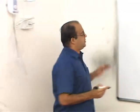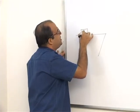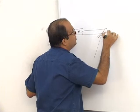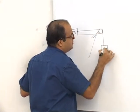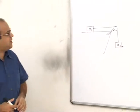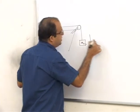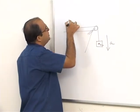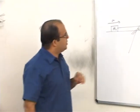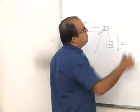Now let's look at the general case. We have mass M1 on a frictionless surface and mass M2 hanging. The pulleys and strings are massless. M2 will accelerate downward and M1 will accelerate to the right. We can find the acceleration and tension by drawing the free body diagrams.